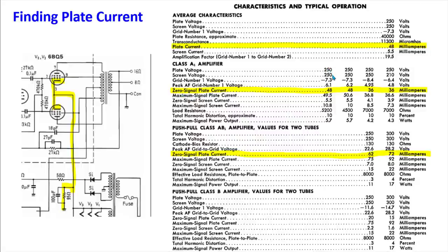The data sheet also breaks down Class A single-ended operation: depending on plate voltage, screen voltage, and negative grid bias, it tells you the typical plate current to run. It also gives values for push-pull Class AB1 amplifiers for two tubes. This is important because in a push-pull configuration, the two 6BQ5 tubes often have their cathodes tied together, sharing a single 95-ohm cathode resistor — so when measuring across it, remember you have two tubes worth of current, not one.